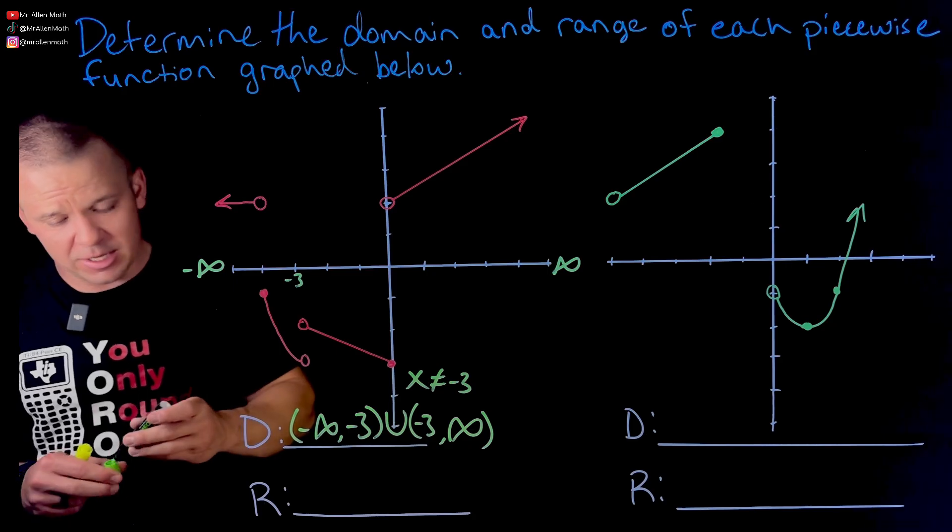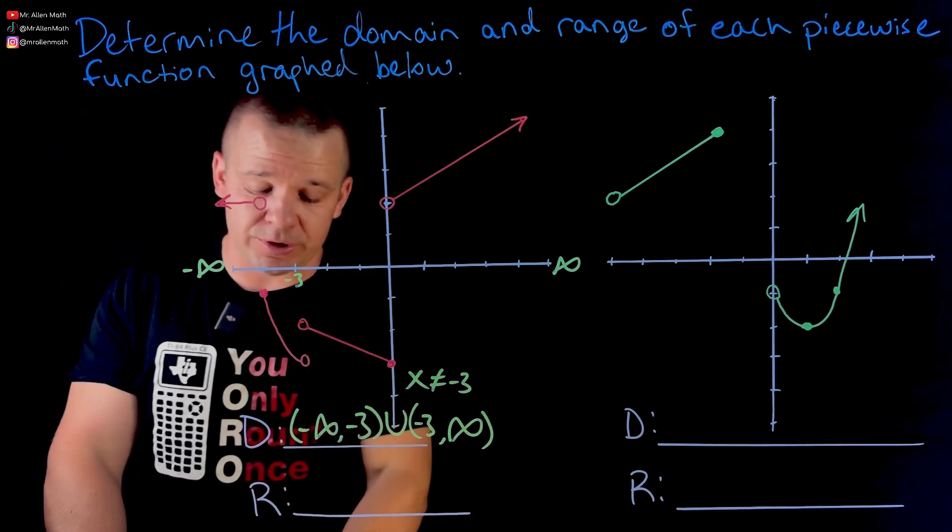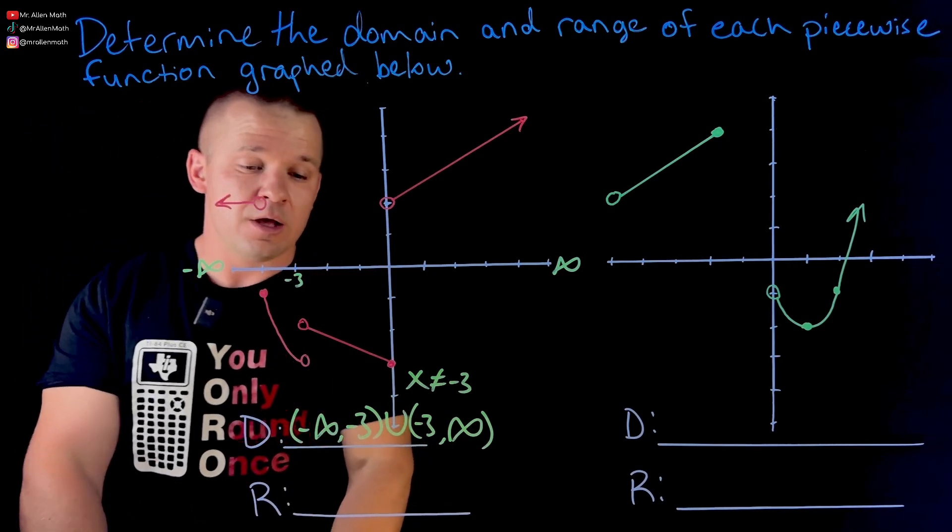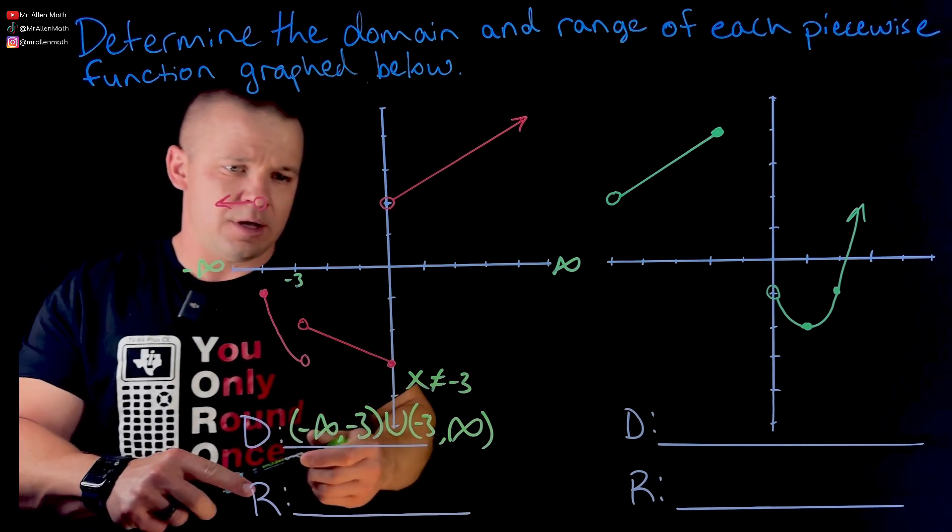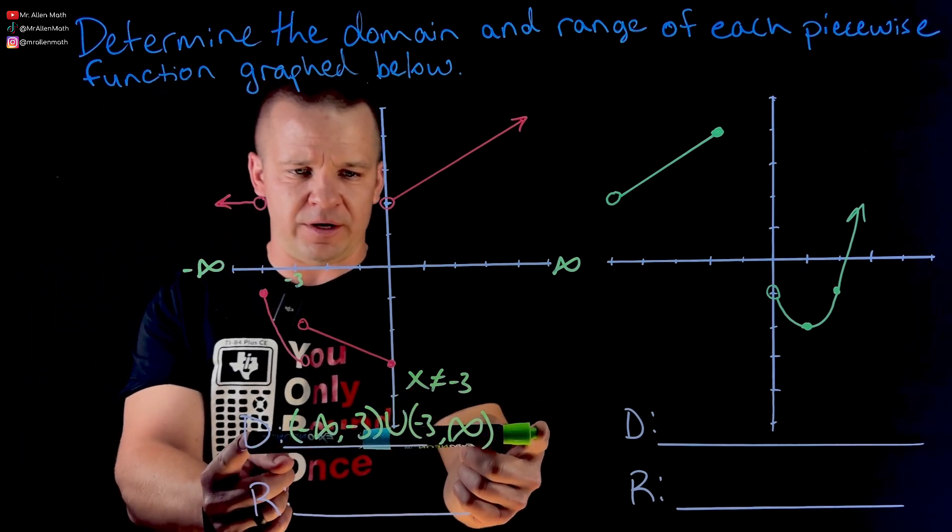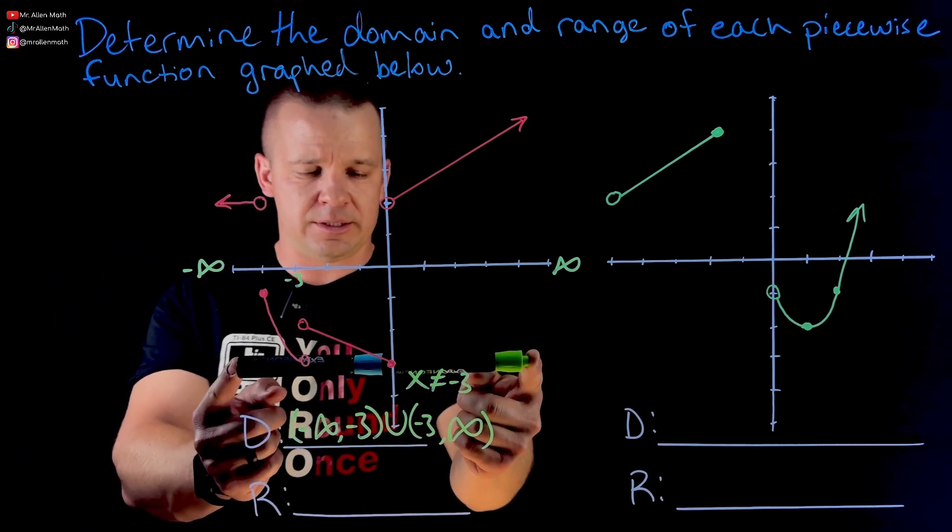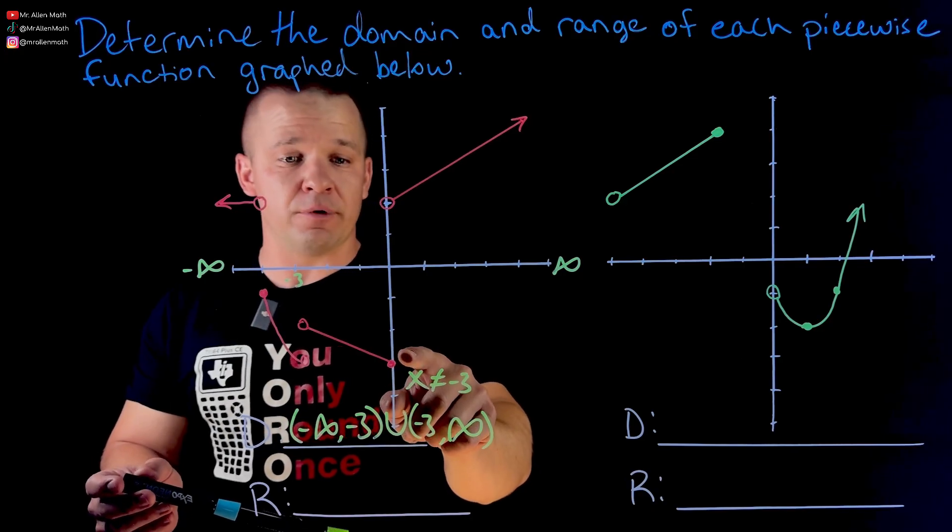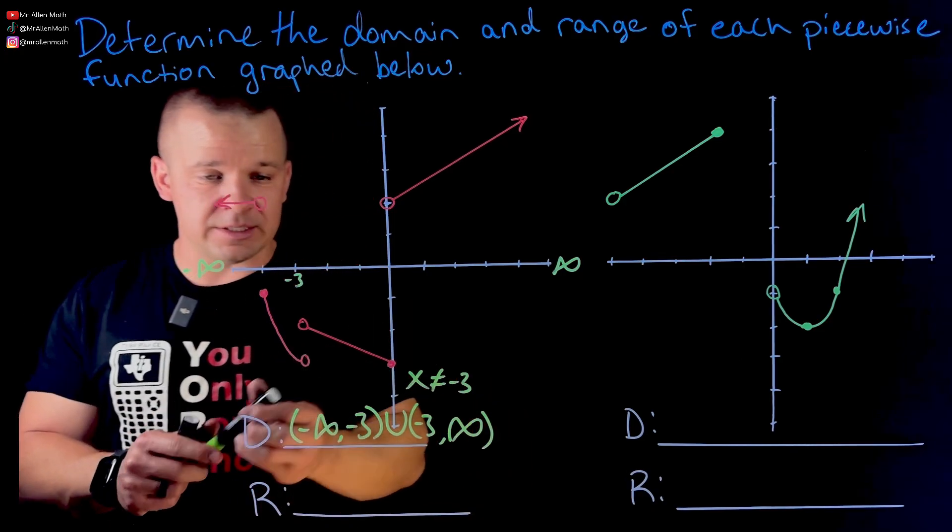All right. How about range? Now we're doing the same process. We're just going up and down. So if I'm looking up and down here, how low does the graph get? Is there a lowest point? Yes. It starts at negative three.